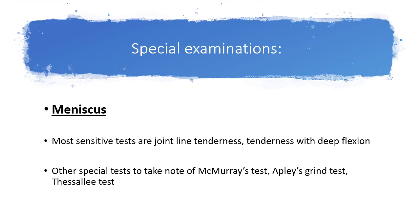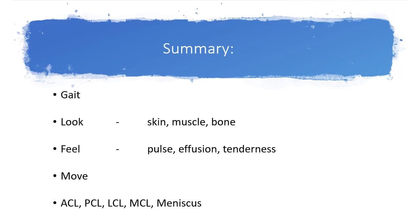For the meniscus, the most sensitive tests are joint line tenderness on palpation and tenderness with deep flexion of the knee. There are also four or five special examinations such as the McMurray test, the Apley grinding test, and the Thessaly test, but the basis of all these tests is to trap a piece of torn meniscus between the femur and tibia to create tenderness. Remember: the most sensitive tests remain joint line tenderness and tenderness with deep flexion.